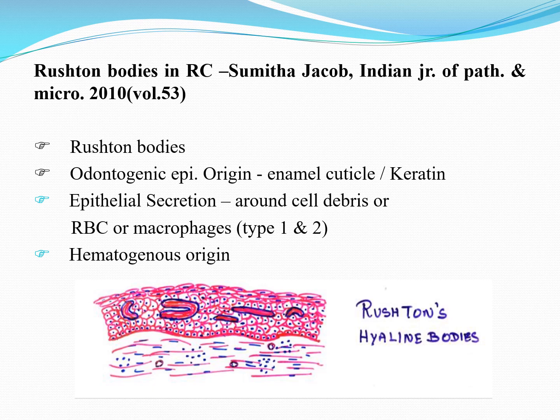Regarding the origin of Rushton bodies: various concepts exist. Some say they derive from an abnormal form of keratin, or are a material secreted by the epithelium similar to enamel, or have a hematogenous origin derived from RBCs. The recent view states that the epithelium itself secretes this material. The exact type of material is still being identified, but it is considered a secretion of the epithelium. Rushton bodies are frequently seen in the epithelium of the radicular cyst.